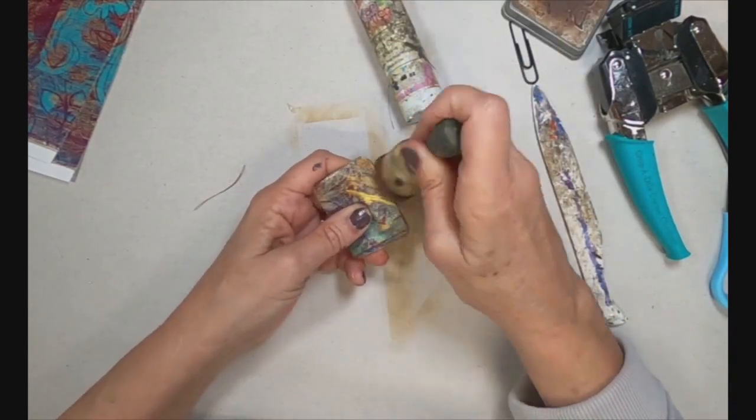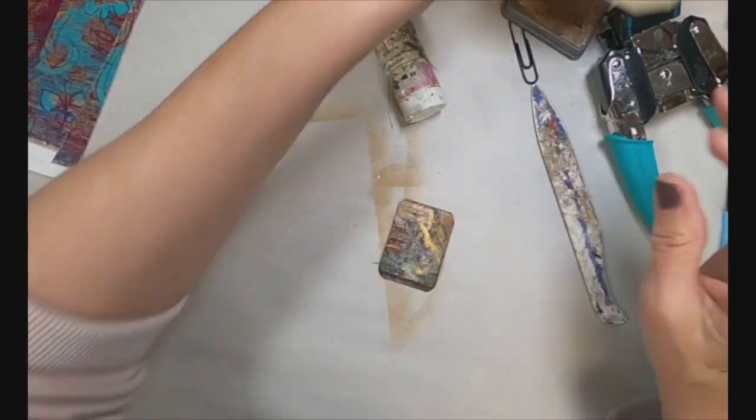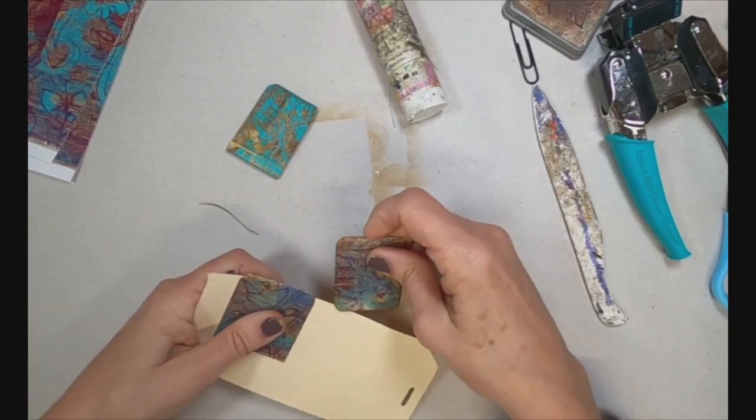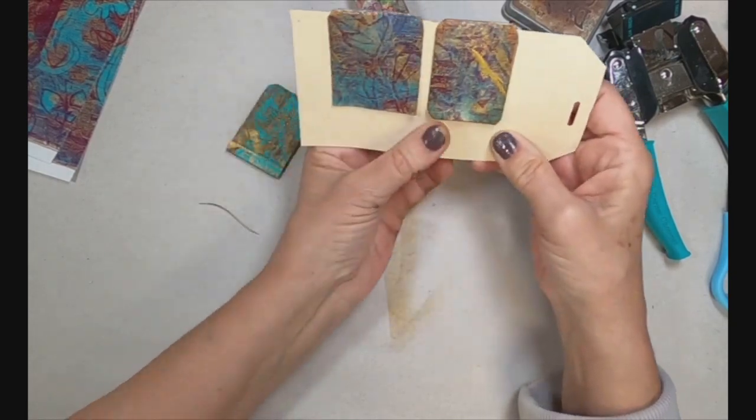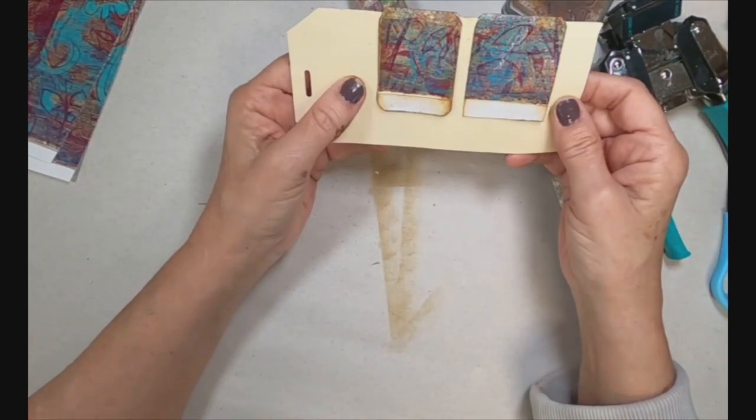Now you can go back and decorate any way you want. You can add lace, you can add postage stamps, you can add any type of ephemera you want on these. I am just creating some rather plain ones to have in stock. And then when I get ready to put them in something, I'll kind of decorate them appropriate with where I'm placing them.